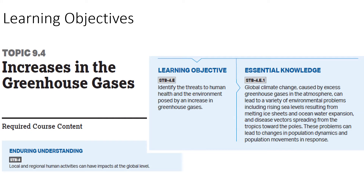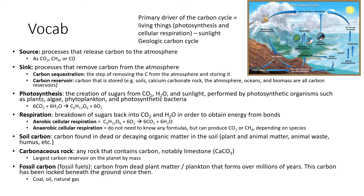The second learning objective is topic 9.4, so we're jumping ahead a little bit into increases in the greenhouse gases. The enduring understanding for this is that local and regional human activities can have impacts at the global level. The learning objective is to identify the threats to human health and the environment posed by increasing greenhouse gases. These two learning objectives are really linked together, so that's why we're going to talk about both of them. Similar to what we did with the water cycle, the hydrologic cycle, I'm going to give you all the vocab first, and then we're going to look at the cycle.